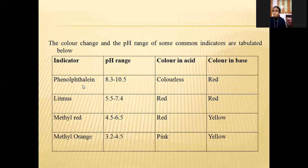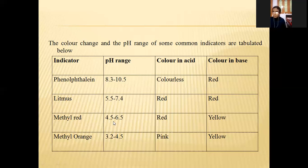To summarize the indicator table: phenolphthalein pH 8.3–10.5, colorless in acid and red in base. Litmus pH 5.5–7.4, red in acid. Methyl red pH 4.5–6.5, red in acid and yellow in base.